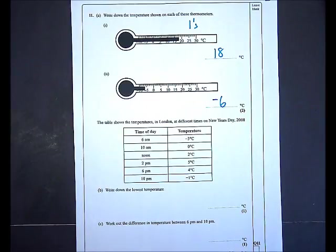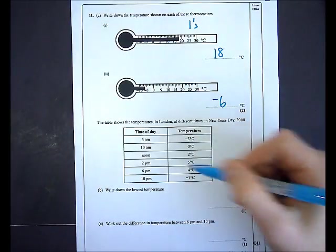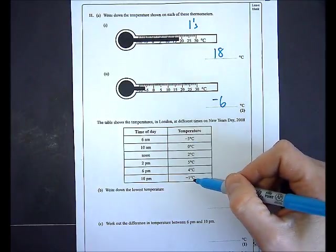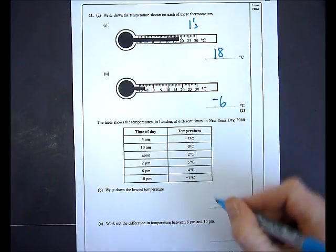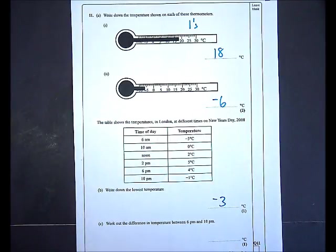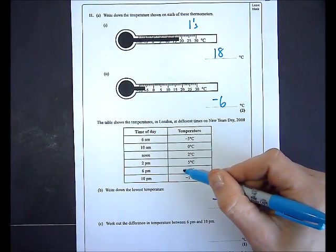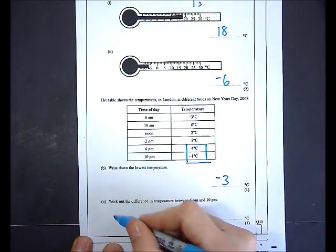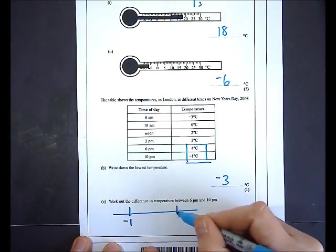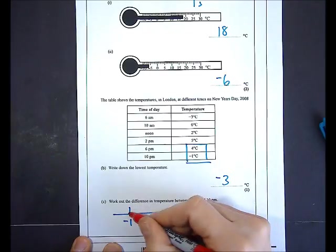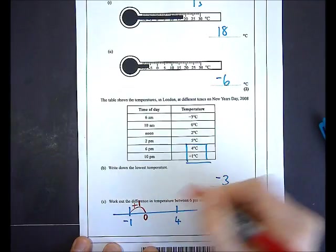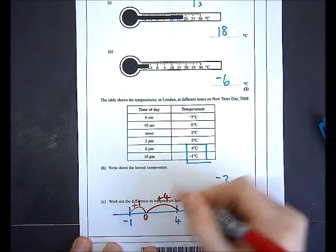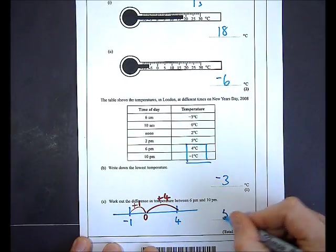In part B I'm shown a table and asked to write down the lowest temperature. Of the two negative numbers, negative three and negative one, negative three is the lowest. In part C I need the difference between 6pm and 10pm temperatures. Drawing a number line from negative one to four: going up one reaches zero, then up four more reaches four, so the difference is 5 degrees.